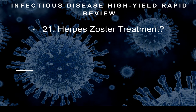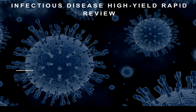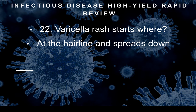Question twenty-one: How do we treat herpes zoster? Herpes zoster is treated with acyclovir — acyclovir is the antiviral drug. Question twenty-two: Varicella rash starts where? Knowing where rashes start and how they spread helps you memorize and differentiate on testing day. Varicella rash will start at the hairline and spread down.